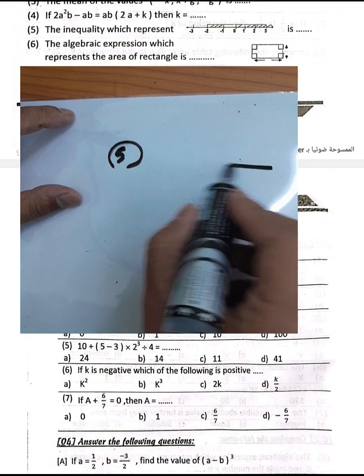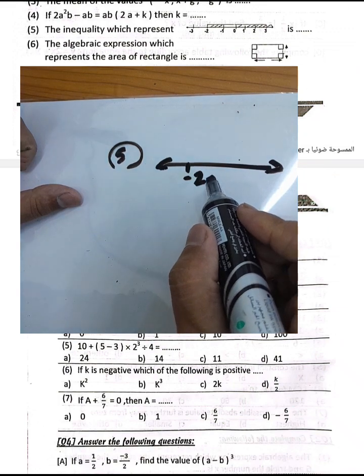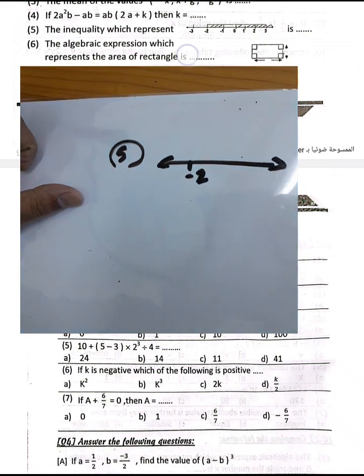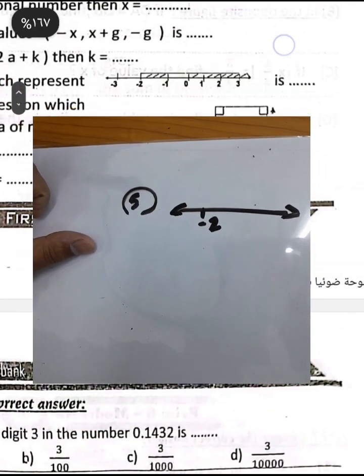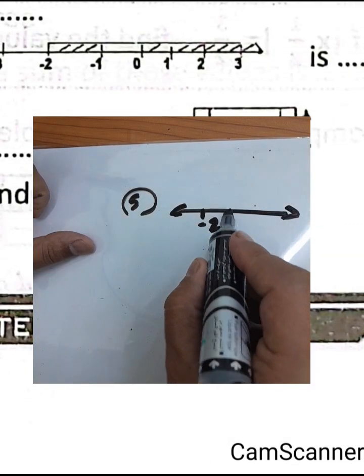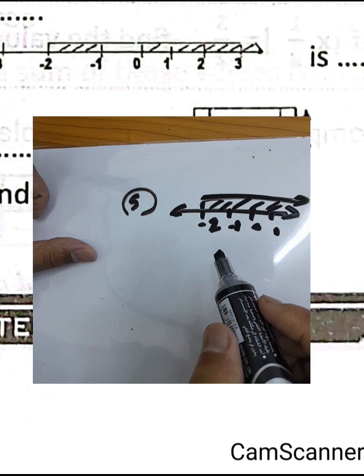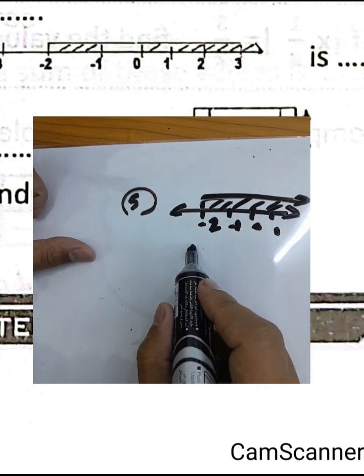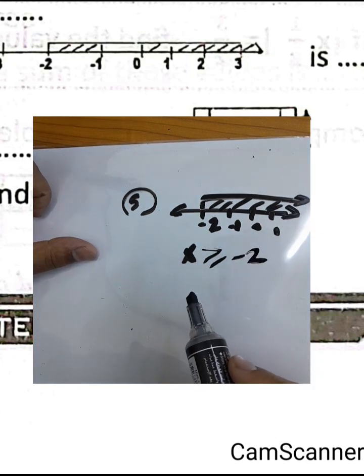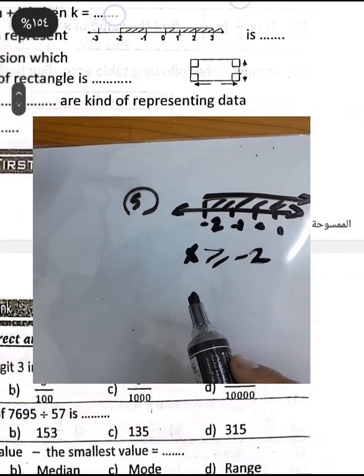Question number 5: The inequality representing the solution on the number line. We have the number line from negative 2 to infinity, with negative 1, 0, 1 marked. The inequality for this solution is x greater than or equal to negative 2, going from negative 2 to infinity.